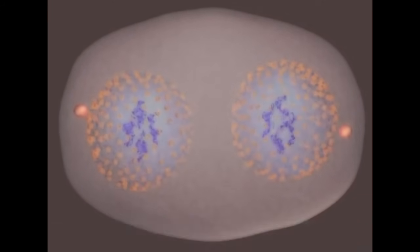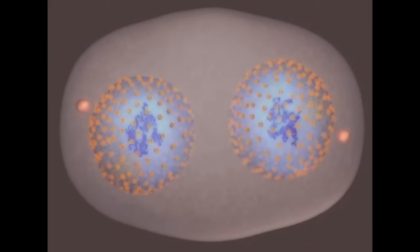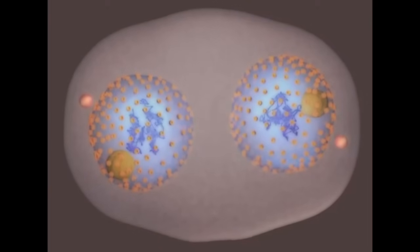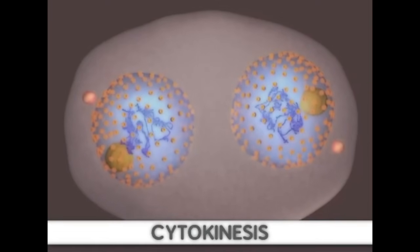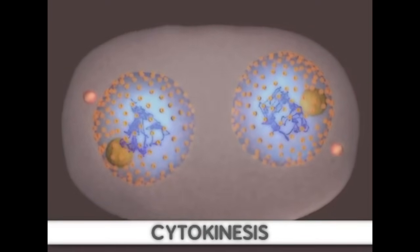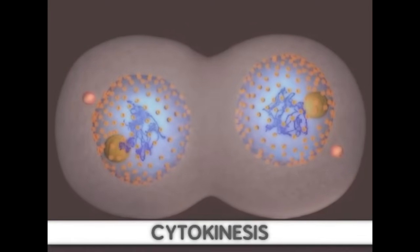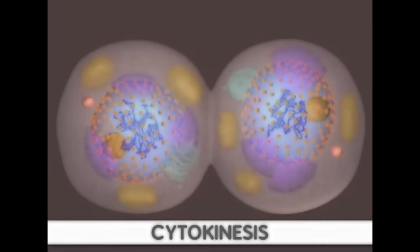Mitosis is now complete. The formation of two cells is all that remains. Following mitosis, the cell undergoes a process called cytokinesis. First, the cell is compressed by a contractile ring that divides the cell into nearly equal halves. By now, the organelles in the cell have been replicated and are divided between the two halves of the cell.